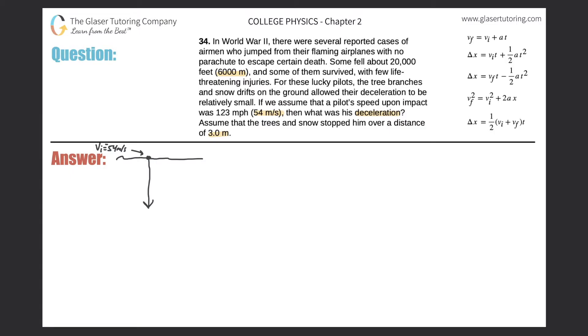So now, if he's falling, great, so we got that. All right, so assume the trees and snow stopped him over a distance of 3 meters. So that means that from here, all the way down, the displacement value is going to be 3 meters. Okay, wonderful.